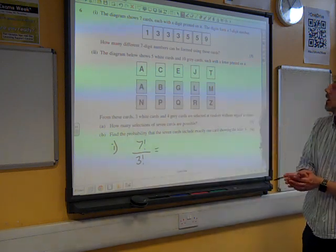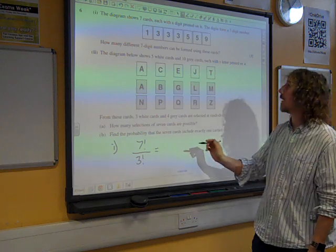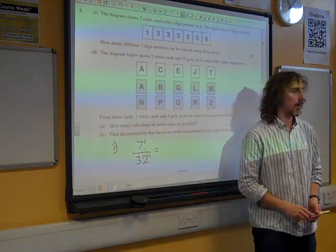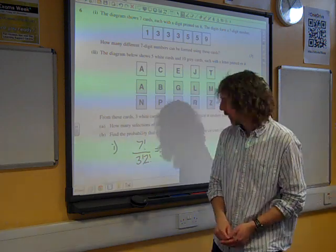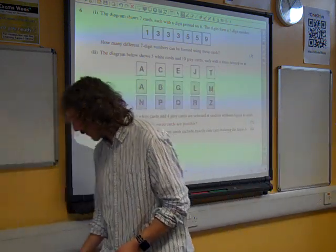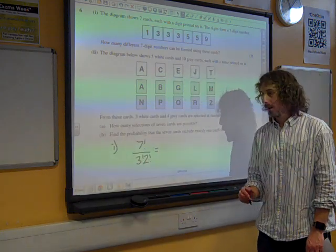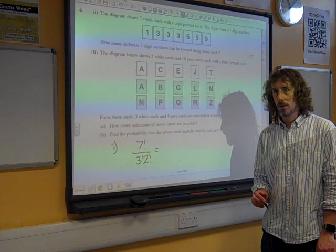Are we happy that that's the number? There's also the two fives. Oh, there's also the two fives. I didn't notice the two fives. Thanks. So we've got seven factorial over three factorial, two factorial, which gives us 420.